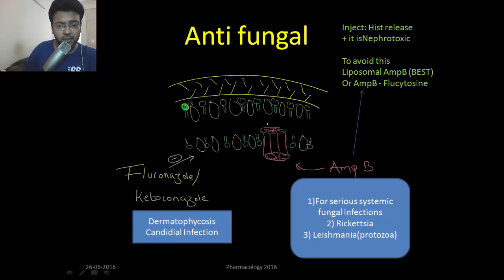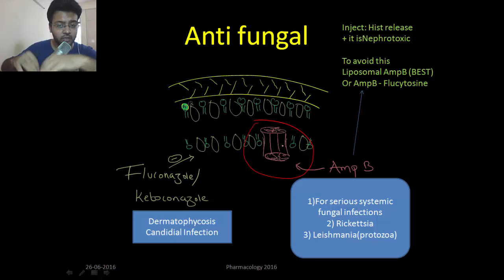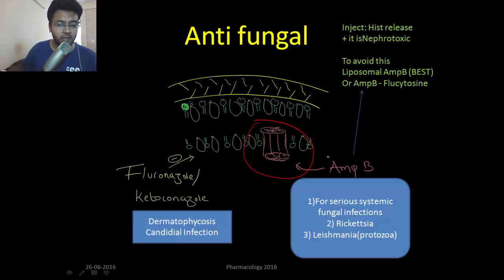Let's talk about Amphotericin B. What does Amphotericin B do? It drills holes in the cell membrane of the fungi, so everything leaks out and the fungus dies. It is reserved for severe systemic infections because of its side effects like nephrotoxicity.